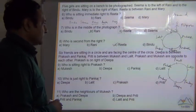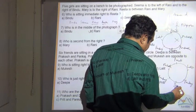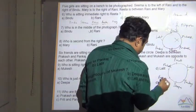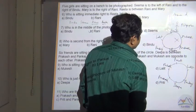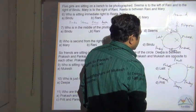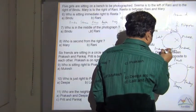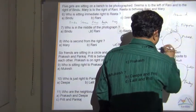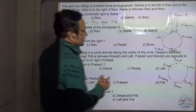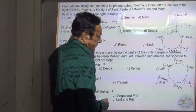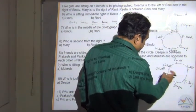Prakash and Mukesh are opposite to each other. Working through the arrangements, Prakash and Mukesh cannot be opposite in certain configurations, so we must choose the arrangement where they are correctly placed opposite to each other.